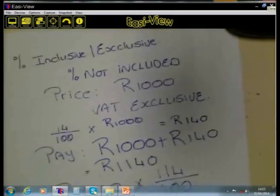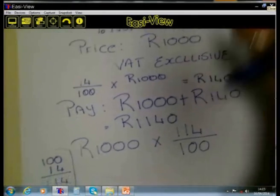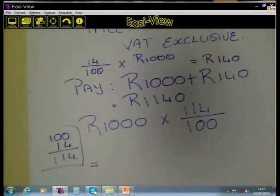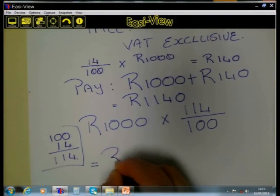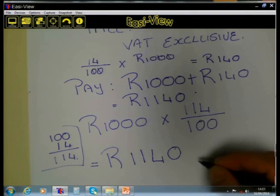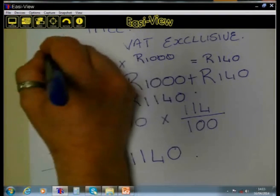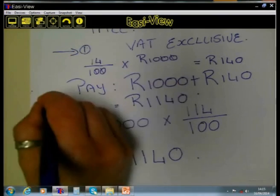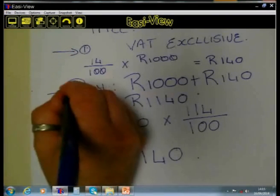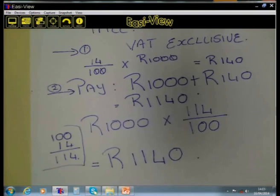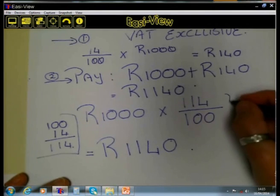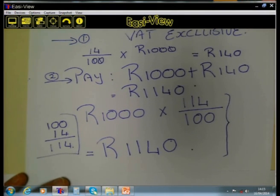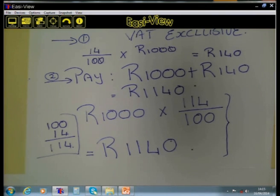The answer is exactly the same as in the first case. So instead of doing it in two steps, I did the whole calculation in one big step — multiplying by 114 over 100. Now, if we are going to do the reverse calculation, we will make it so that the VAT is included.